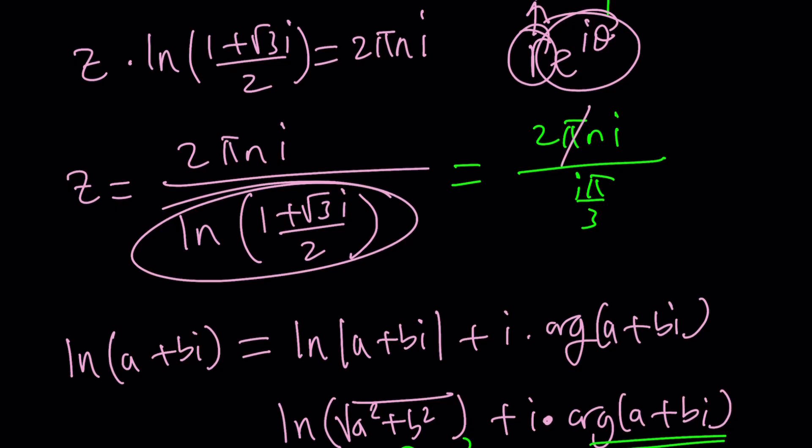Take a look. We can cancel out the pi and the i we end up with 2n divided by 1 third make no mistake and that is going to be 6n. But what is that supposed to mean? n is an integer don't forget that. So any integer that is a multiple of 6 including 0 is a solution at least it seems like that right.